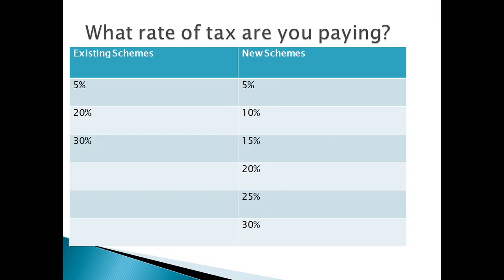In Budget 2020 there are two types of schemes: the existing scheme and the new scheme. Under the existing scheme there are three rates — 5%, 20%, and 30%. In the new scheme there are six layers — 5%, 10%, 15%, 20%, 25%, and 30%. If you opt for the existing scheme you can get income tax deductions of up to ₹1.5 lakhs under Section 80C, but in the new scheme you will not get 80C deductions.